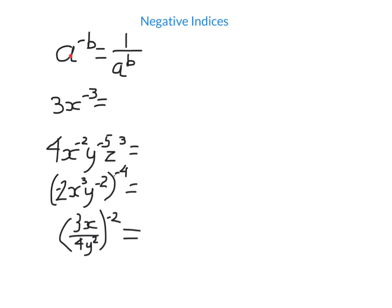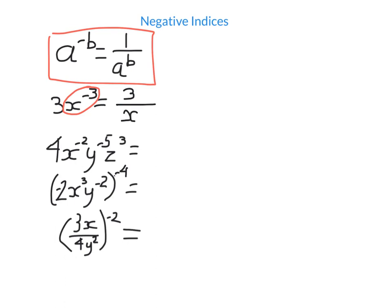The rule for negative indices is: a^(−b) = 1/a^b. If you have a negative power, move it to the denominator and write it with a positive power. For example, 3x^(−3): only x has the negative power, so the 3 stays on top and x^(−3) moves to the bottom as x³, giving 3/x³. Any term with a positive power stays on top; any term with a negative power moves to the bottom with a positive power.